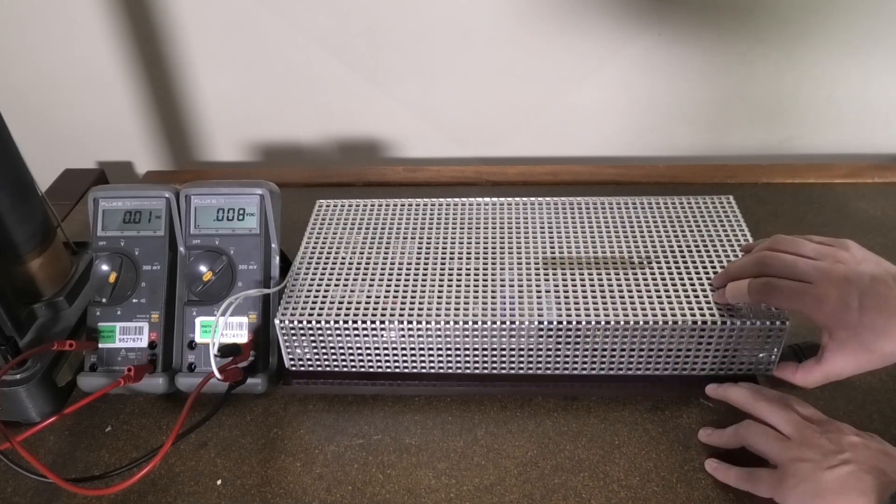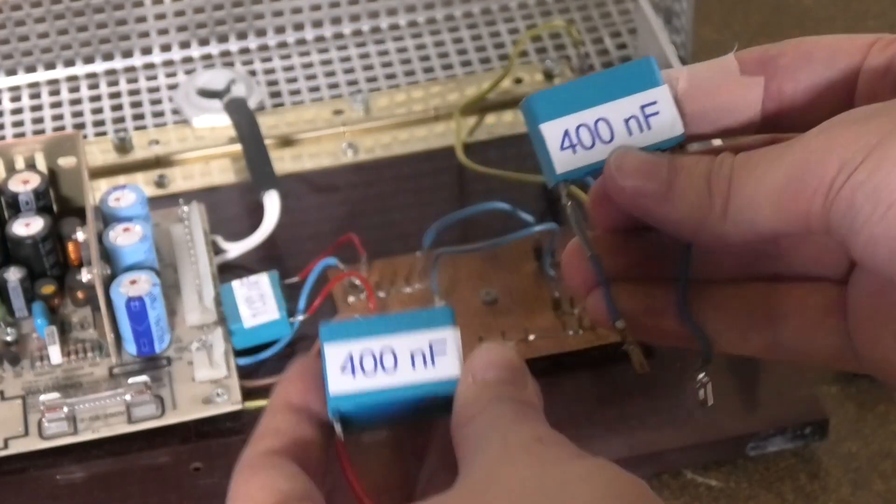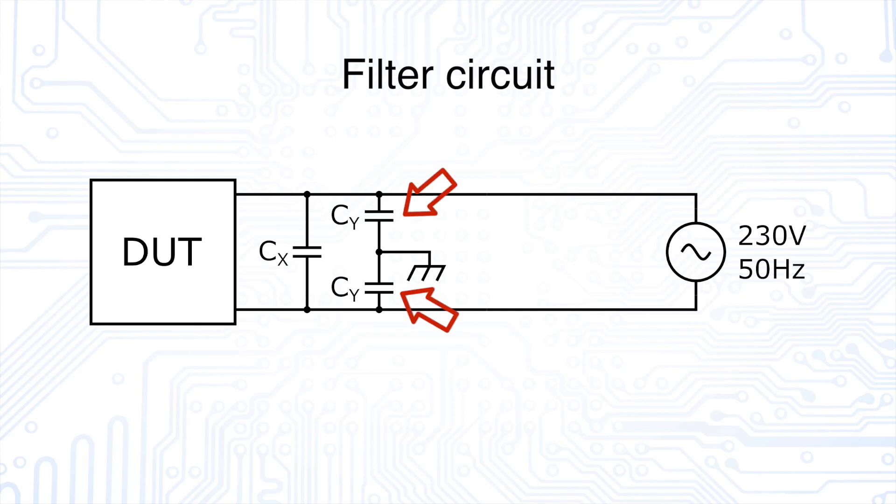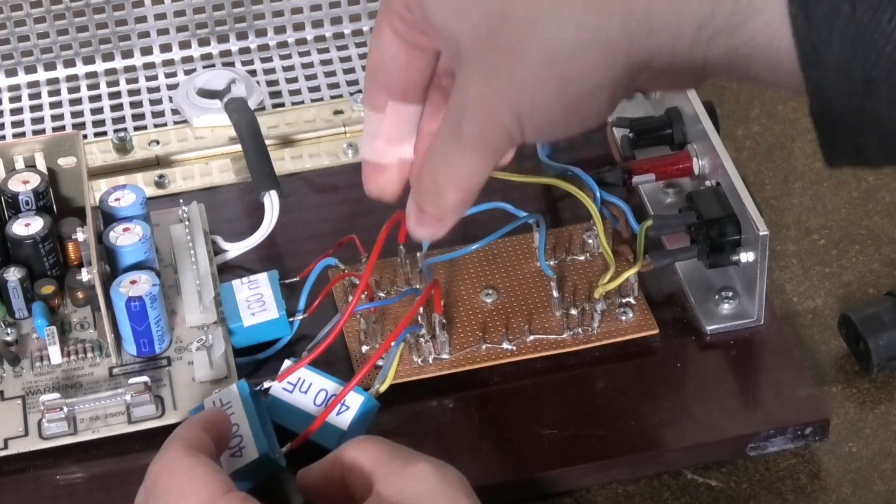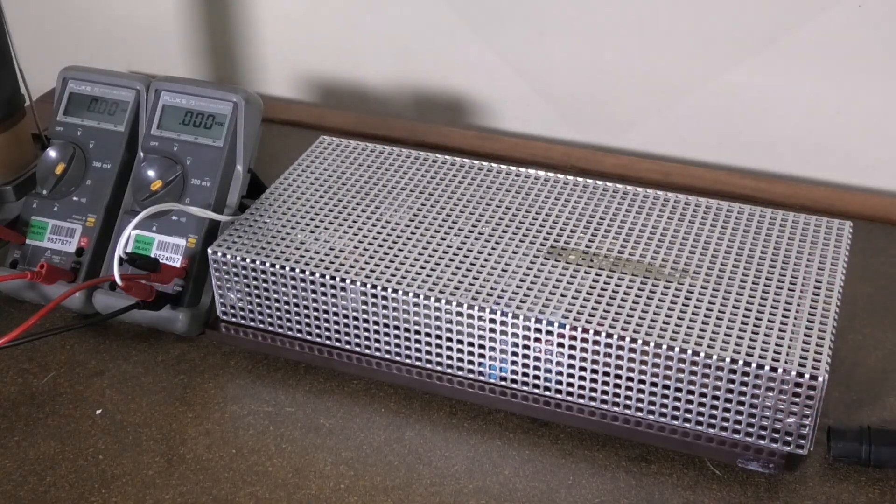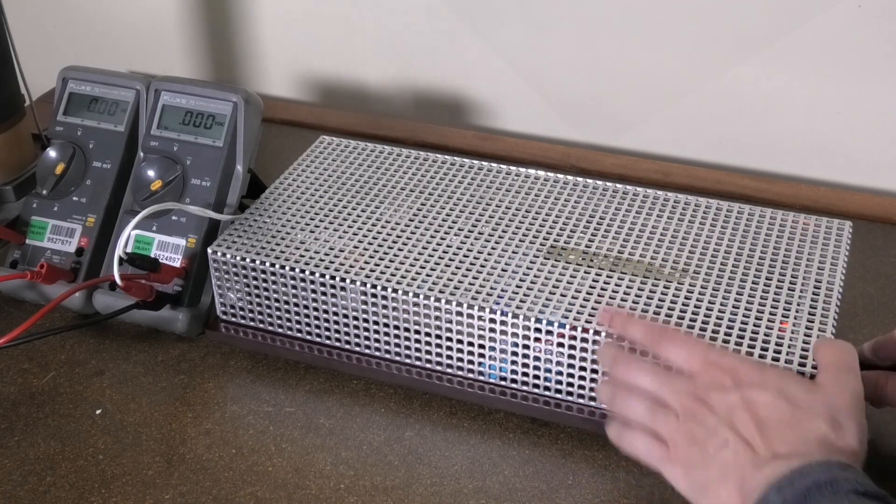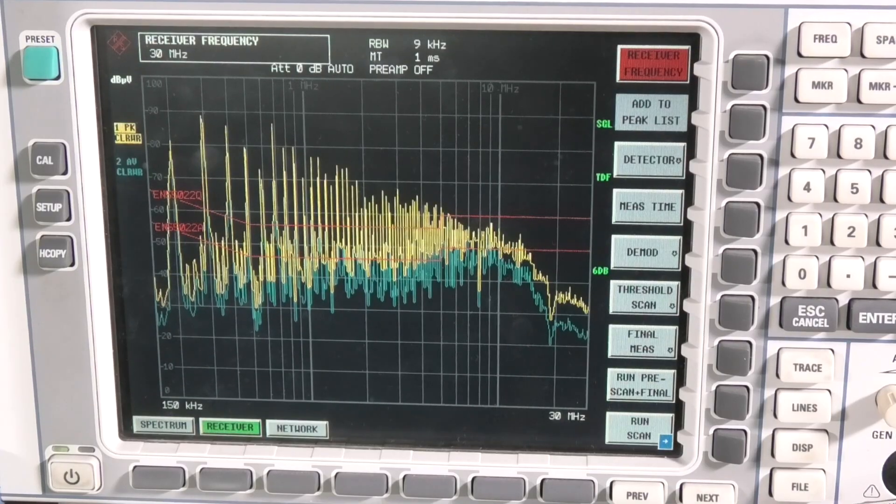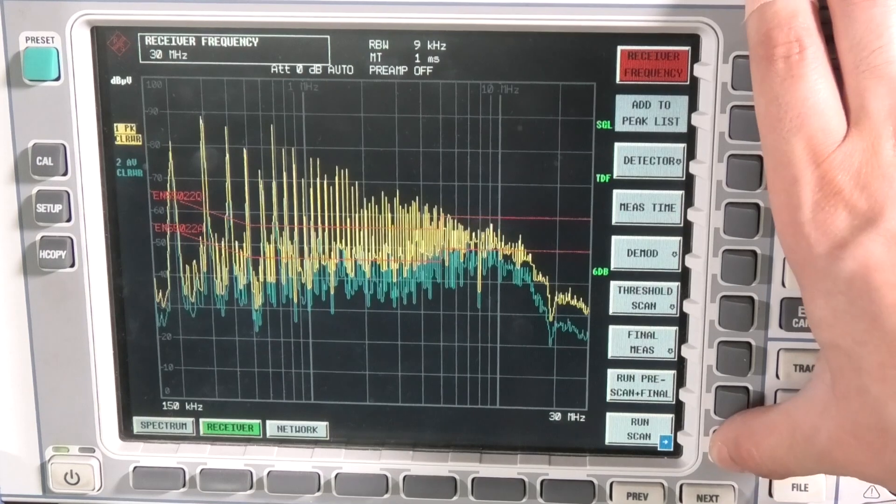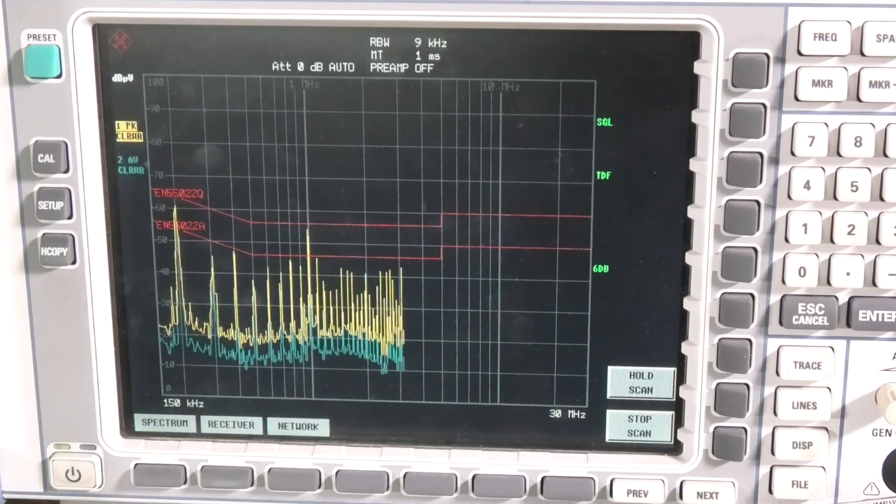Not yet, because we haven't dealt with common mode filters yet. Therefore, let's put in two y-capacitors. These should be as identical as possible so that we don't accidentally convert common mode problems into differential mode. Let's hope that this has made a difference. Hopefully a positive difference. Yes! We managed to be below the limits.